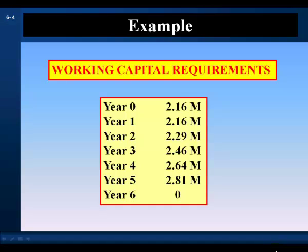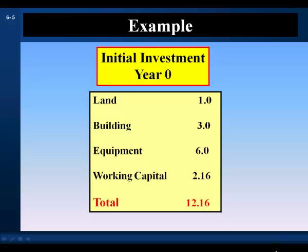Given the risk of the project, the appropriate opportunity cost of capital is 12%. We have estimates for our net working capital requirements in each year. Our initial investment in net working capital in year zero is $2.16 million. For cash flow from capital requirements, we purchase land for $1 million, a building for $3 million, and equipment for $6 million, with an initial investment in net working capital of $2.16 million, giving a total initial investment in year zero of $12.16 million.